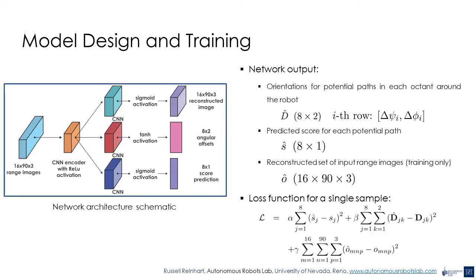A schematic diagram of the network architecture is shown on the left. First, a stack of recent range images is passed to a series of convolutional layers which extract features from the input. These features are then input into three separate subnetworks: one responsible for predicting orientations of trajectories within each octant defined by horizontal and vertical angular offsets, a second responsible for predicting path scores within each octant, and a third decoder network trained to reconstruct the original input images. The decoder is only used during training to encourage extracted features to retain geometric information. The model is trained to minimize the mean squared error between predicted and obtained scores, angular offsets, and the original and reconstructed images.